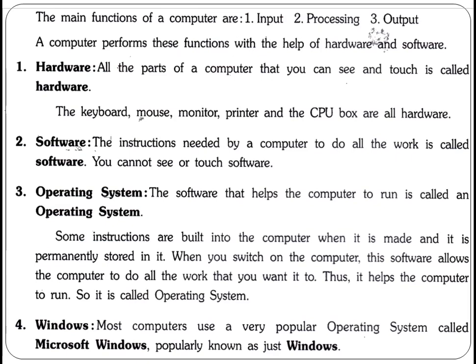Input is the data which is entered into the computer — data fed through the keyboard or mouse, that is called input. Processing means the work that happens on the input — whatever process the computer does through the CPU on that data, that is called processing. And then output — after processing, the data that appears on the screen is called the output, or result.